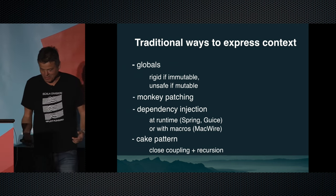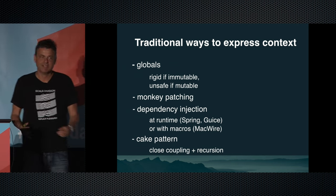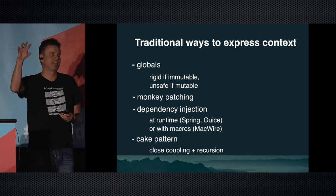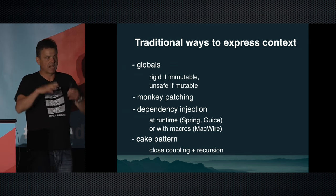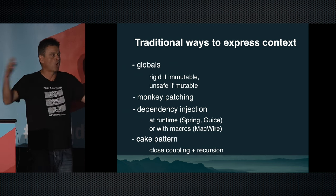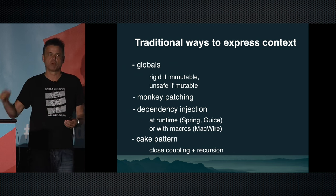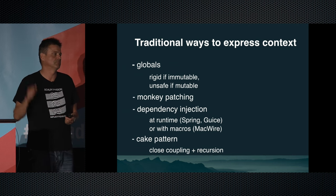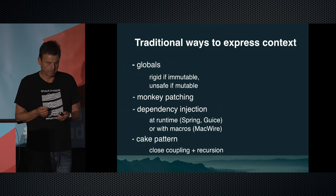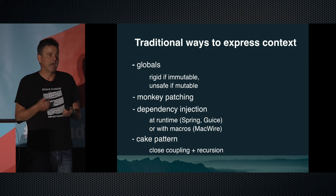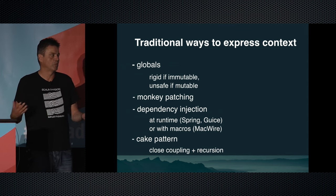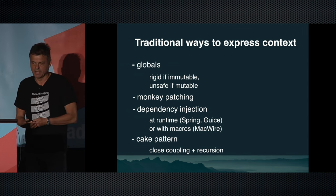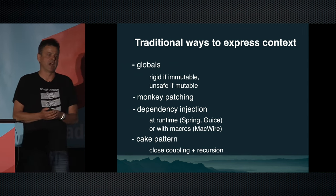Monkey patching means that basically you overwrite things in an object or in your root class — you overwrite them for the whole program to see. Some part of the program just changes a method globally. It's very popular in languages like Ruby. And that, of course, is a global effect — a very invisible, insidious global effect. So we don't want to do that.